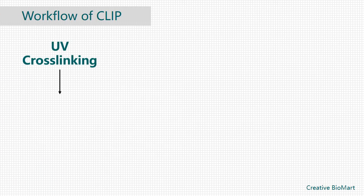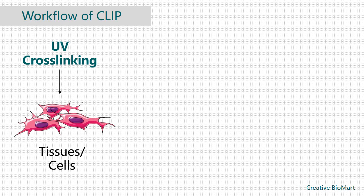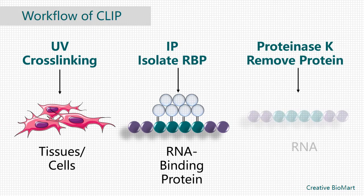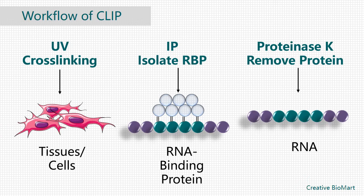Workflow of CLIP. Tissues or cells are placed under exposure to ultraviolet light. After the cross-linked cells are lysed, the target protein is isolated by immunoprecipitation. Separate the RNA-protein complexes from free RNA using gel electrophoresis and membrane transfer. Proteinase K digestion is then performed in order to remove protein from the complexes. This step leaves a peptide at the cross-linked site,